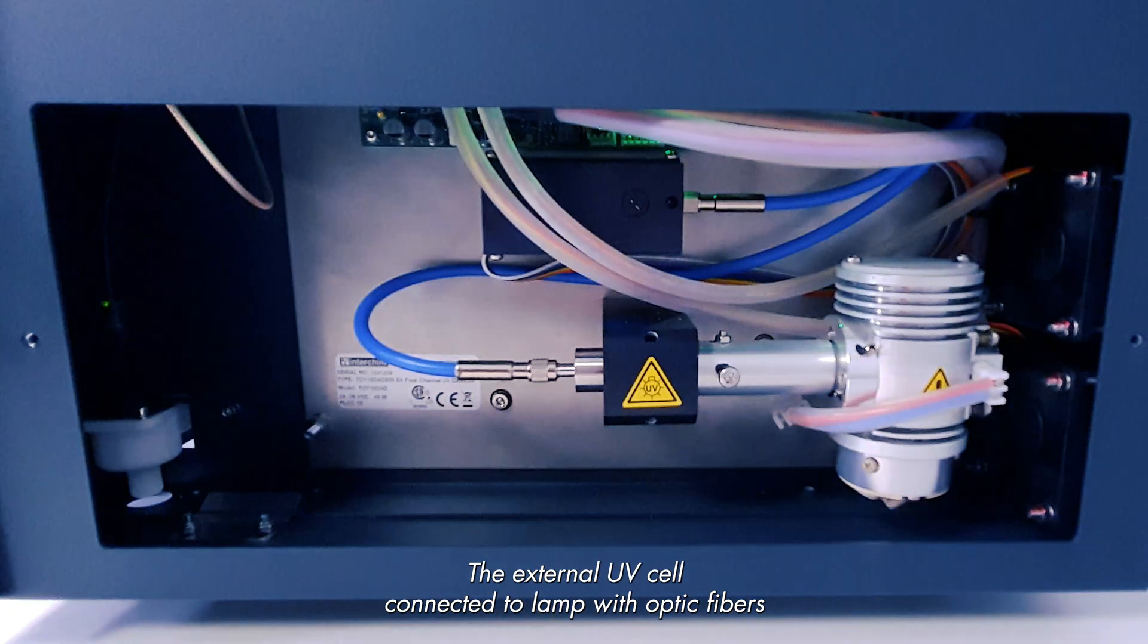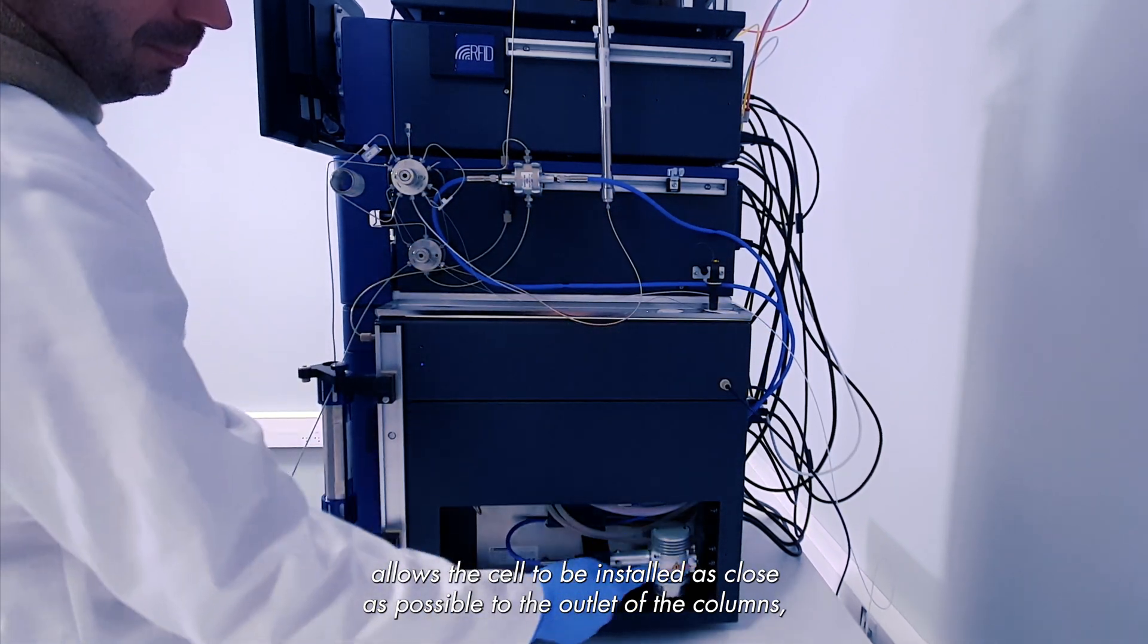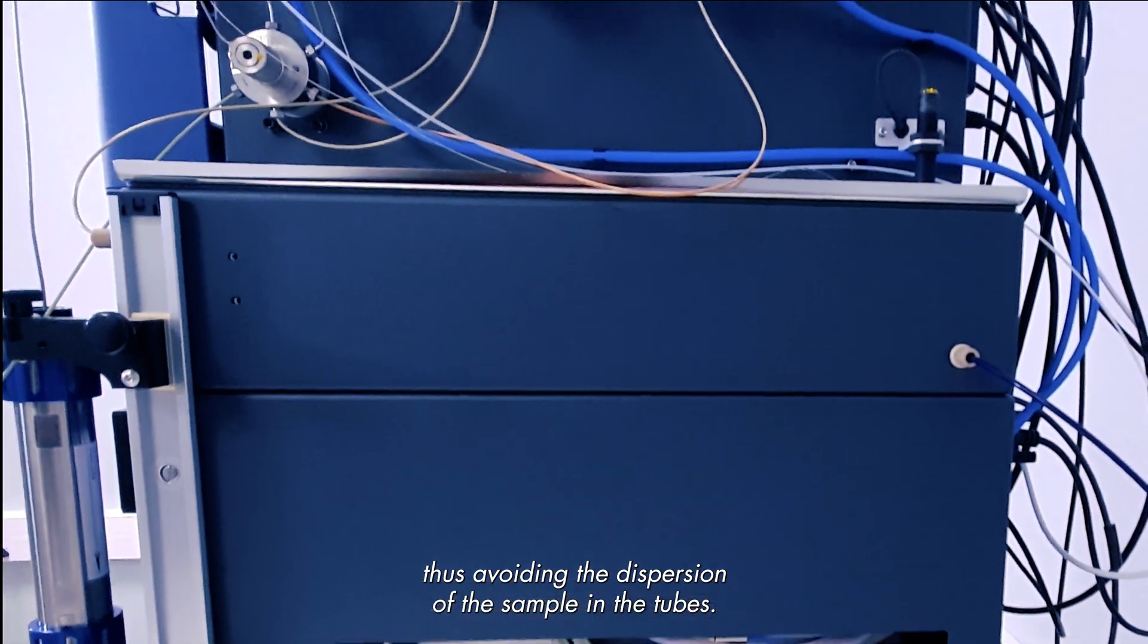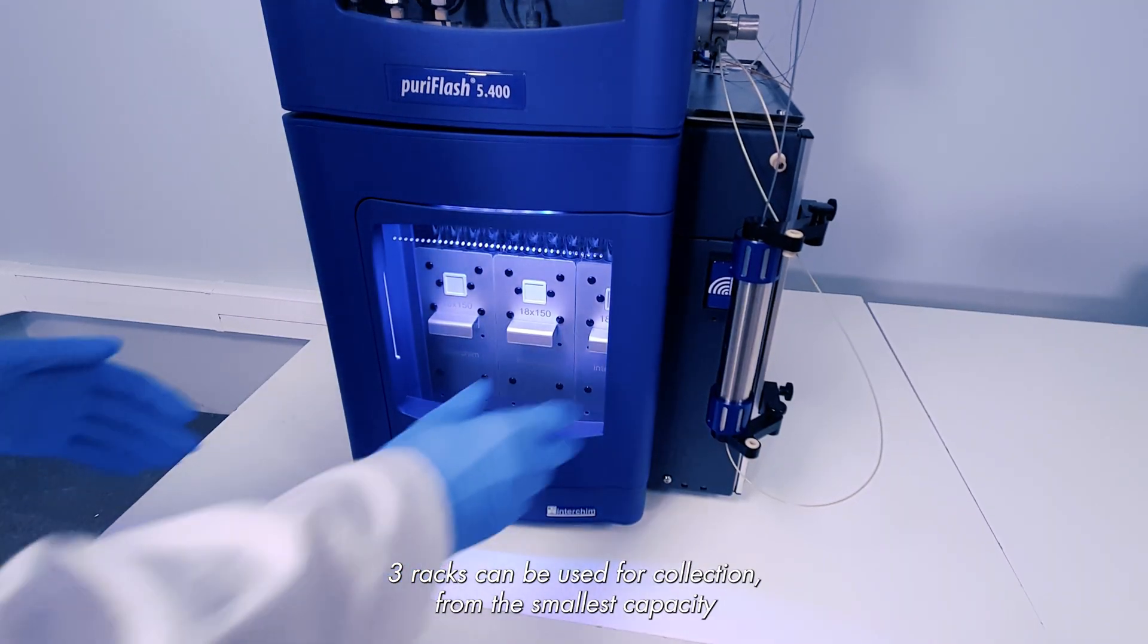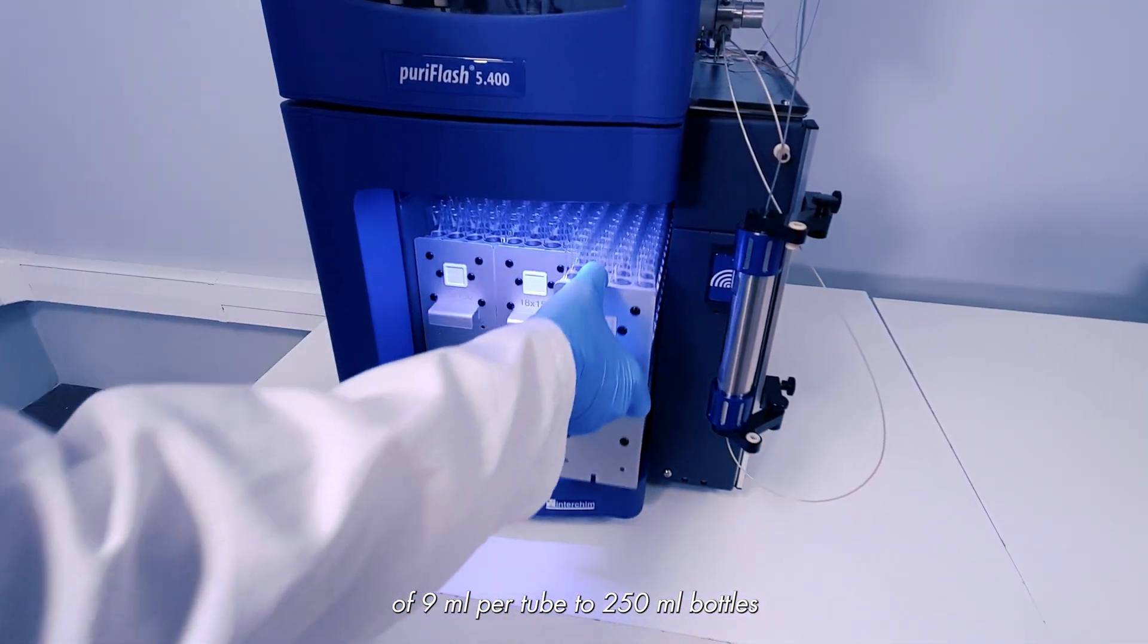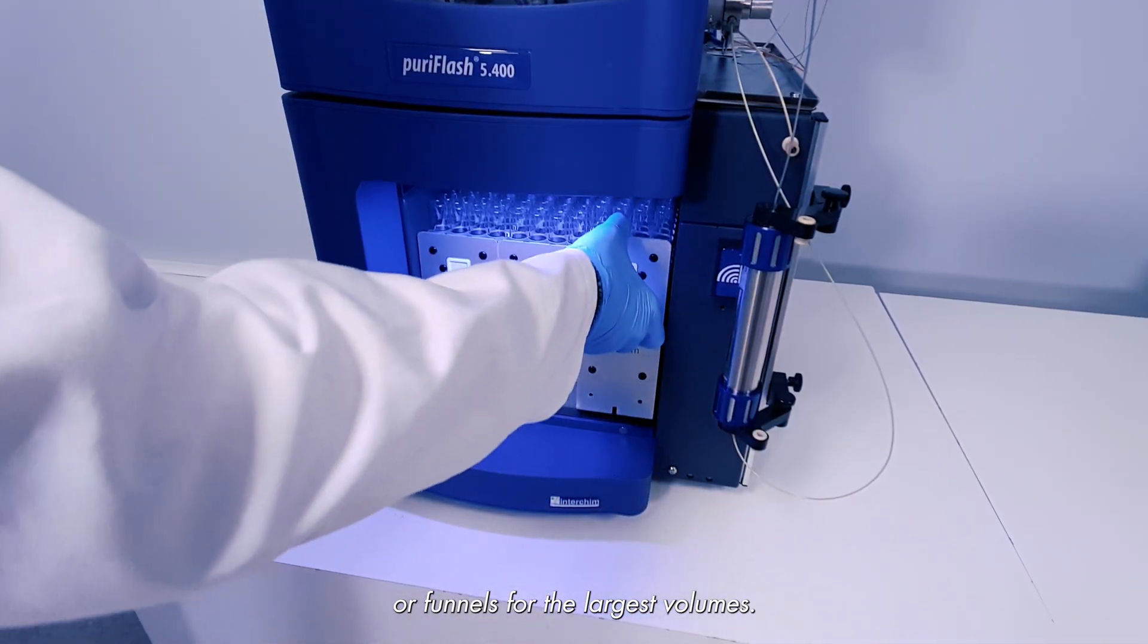The external UV cell connected to lamp with optic fibers allows the cell to be installed as close as possible to the outlet of the columns, thus avoiding the dispersion of the sample in the tubes. Three racks can be used for collection, from the smallest capacity of 9 milliliters per tube to 250 mm bottles, or funnels for the largest volumes.